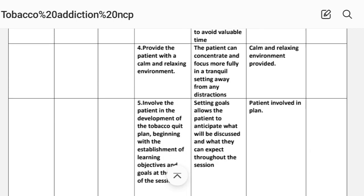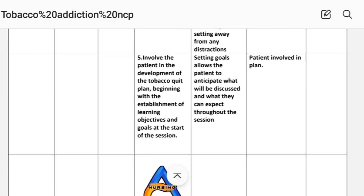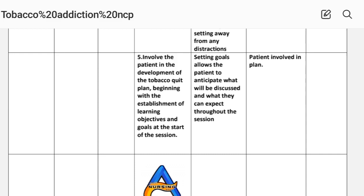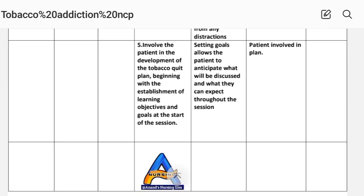Number four: provide the patient with a calm and relaxing environment. Rationale: the patient can concentrate and focus more fully in a tranquil setting away from any distractions. Implementation: calm, relaxing environment provided. Number five: involve the patient in the development of the tobacco cessation plan, beginning with the establishment of learning objectives and goals at the start of the session. Rationale: setting goals allows the patient to anticipate what will be discussed and what they can expect throughout the session. Implementation: patient involved in the plan.